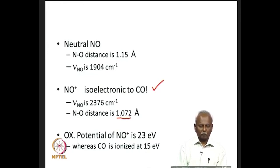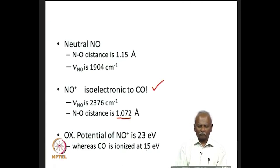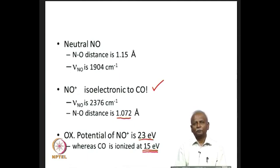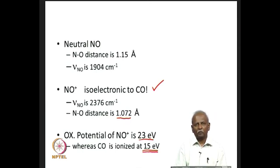Looking at the oxidation potential of NO⁺: while carbon monoxide is ionized at 15 eV, NO⁺ can be oxidized only if you supply 23 eV. That is a significantly larger number, telling us it will be very difficult to remove an electron from NO⁺. This indicates that NO⁺ is going to be a poorer donor compared to carbon monoxide. Carbon monoxide itself is not a great donor ligand, but NO⁺ will be an even weaker donor.